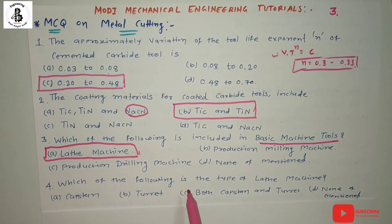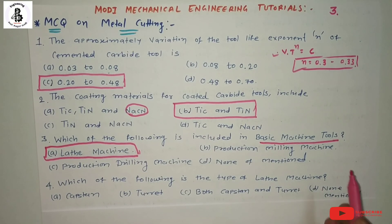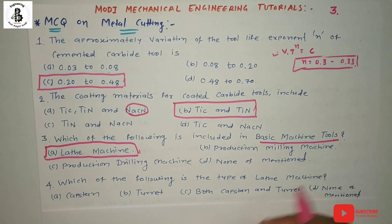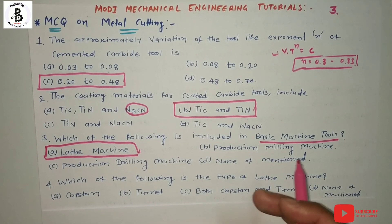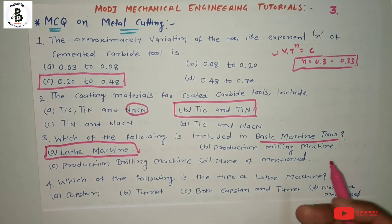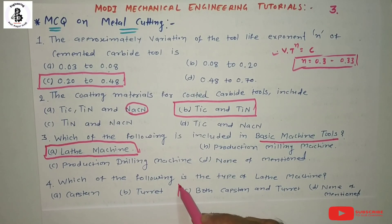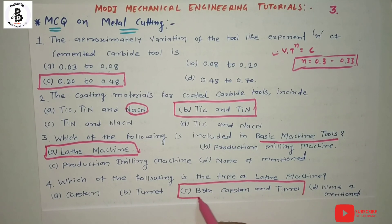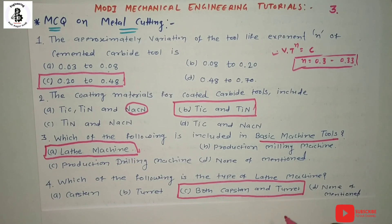Question 4: which of the following are types of lathe machine? Options: A) capstan lathe, B) turret lathe, C) both capstan and turret lathe, D) none of the above. Both the capstan and turret lathe are types of lathe machines, so the answer is C. There is a basic difference between them — for detailed study of that difference, refer to the link in the description.